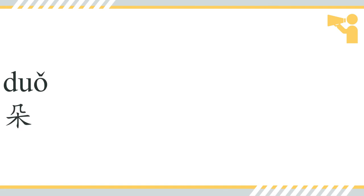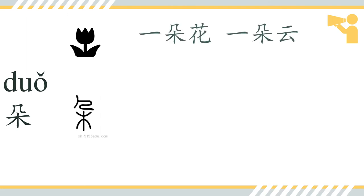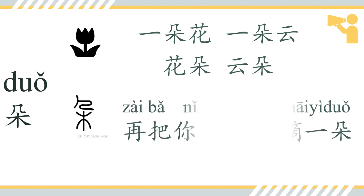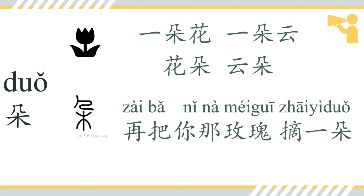Next is 朵, which is a measure word for flowers. The character pictures a blossom drop. We can say 一朵花, a flower; 一朵云, a cloud. Also 花朵 means 'the flower', and 云朵 means 'the cloud'. In this song we have 再把你那玫瑰摘一朵.